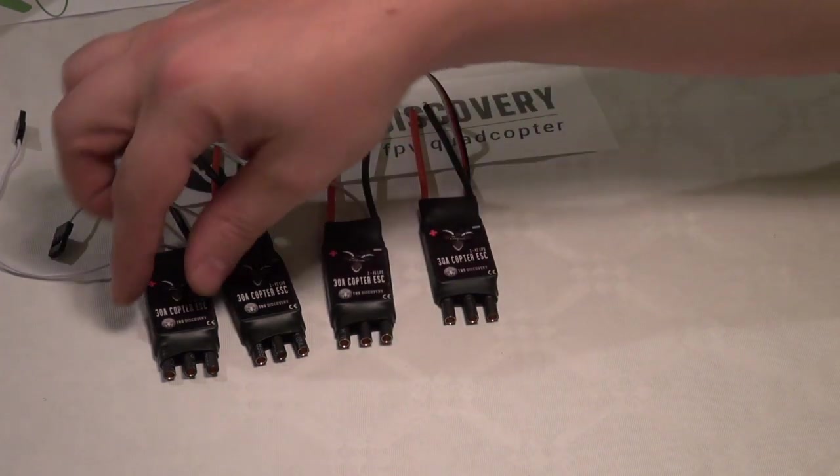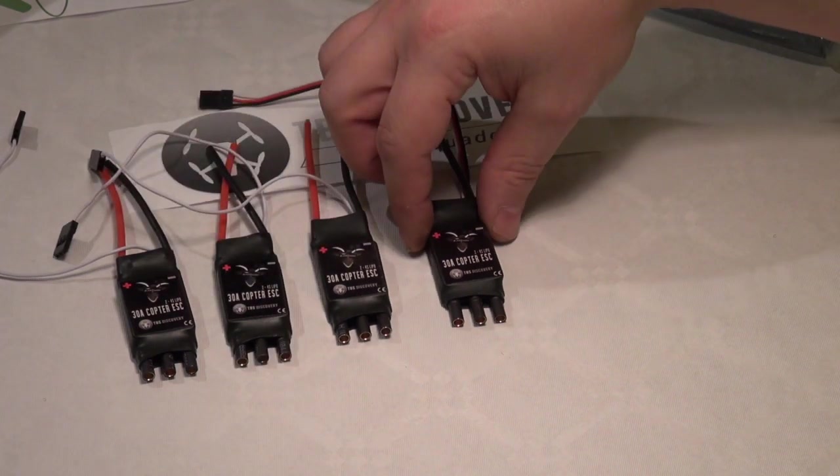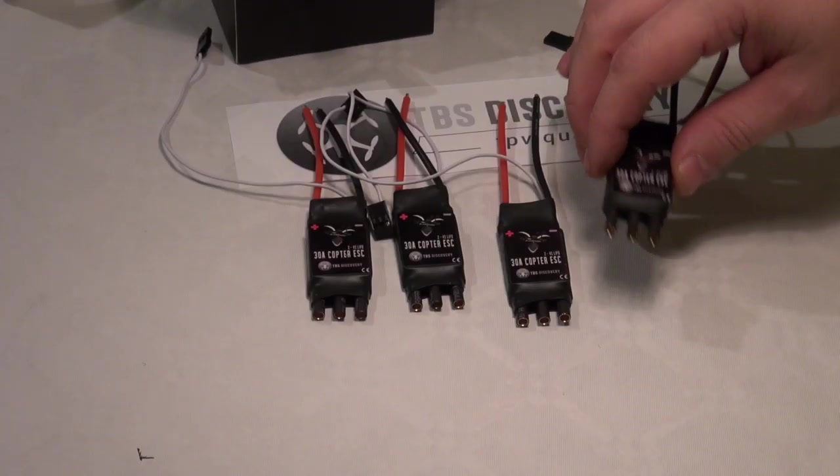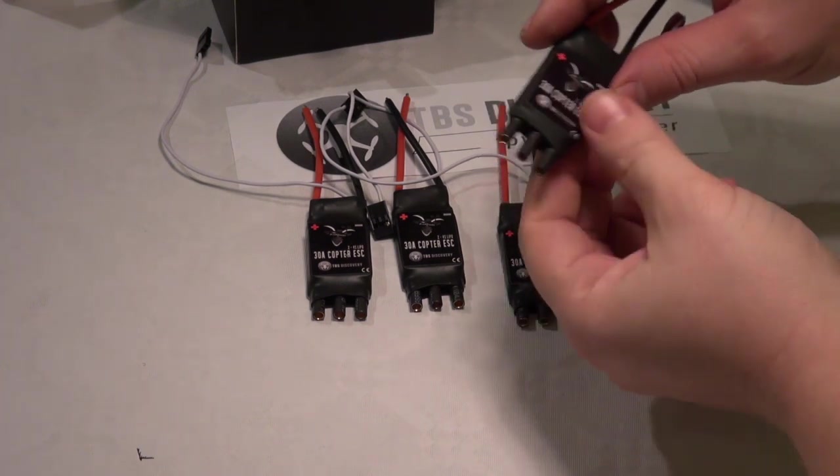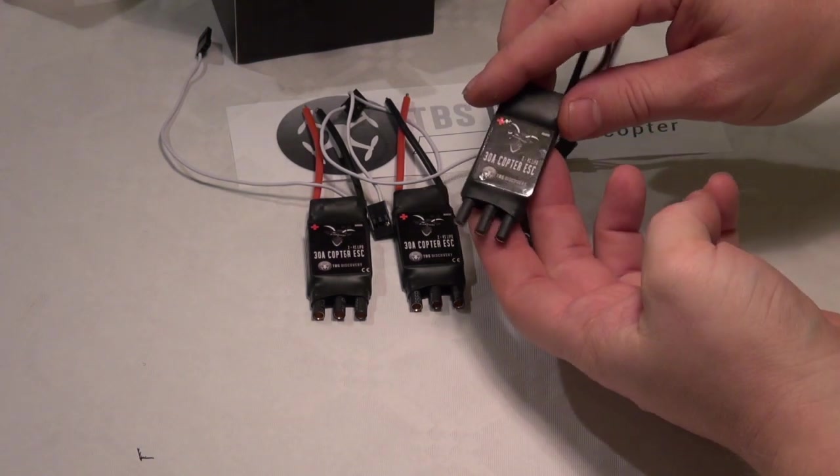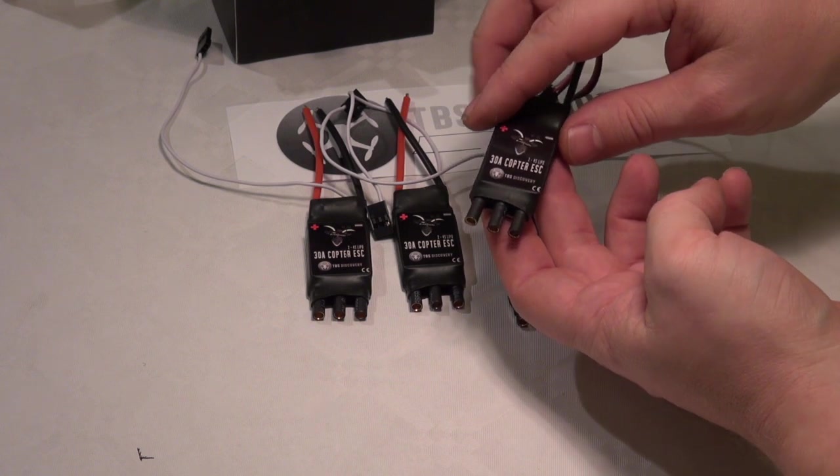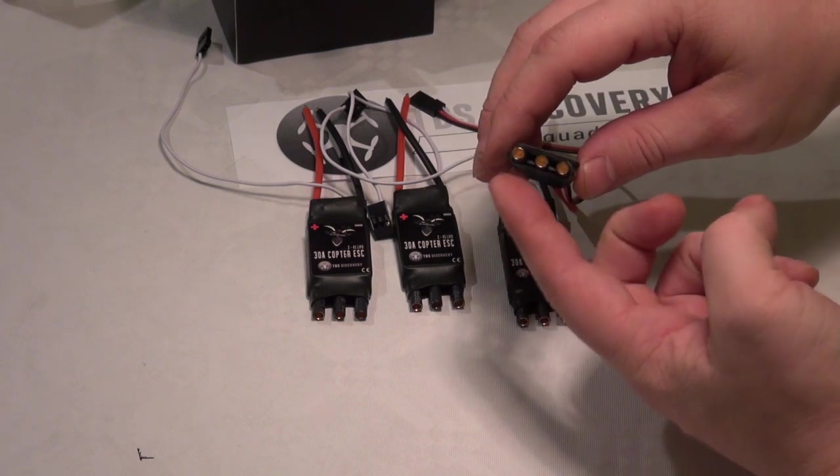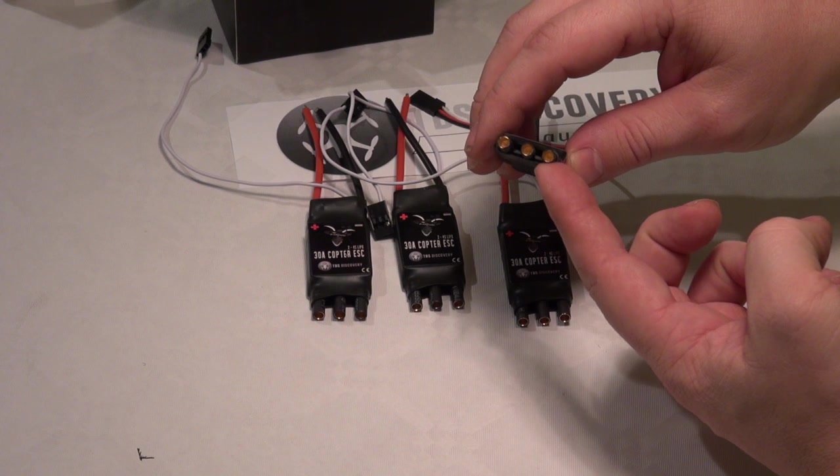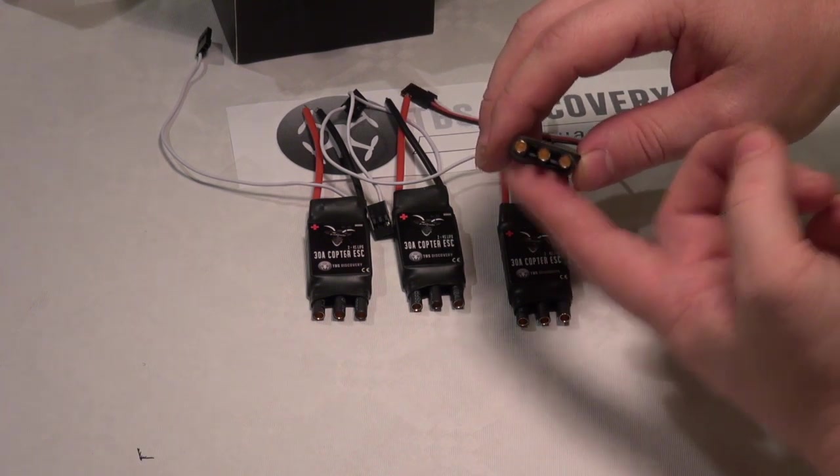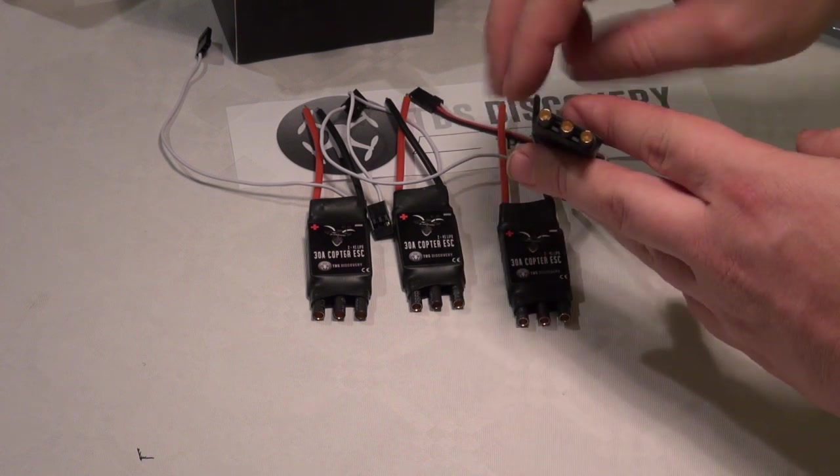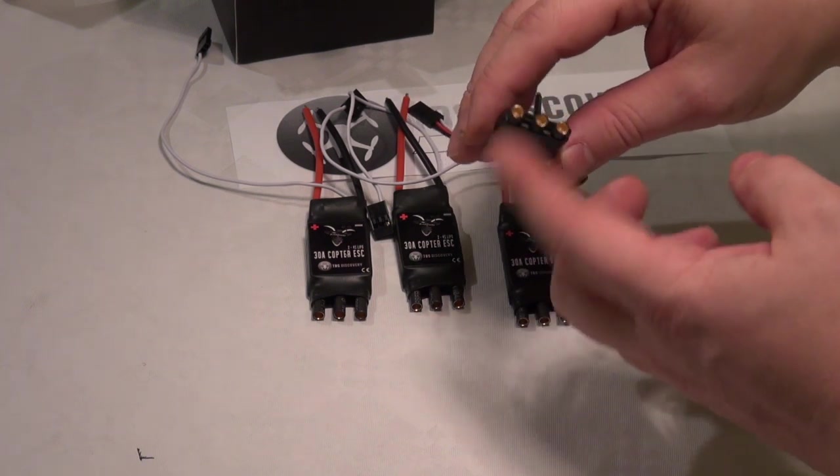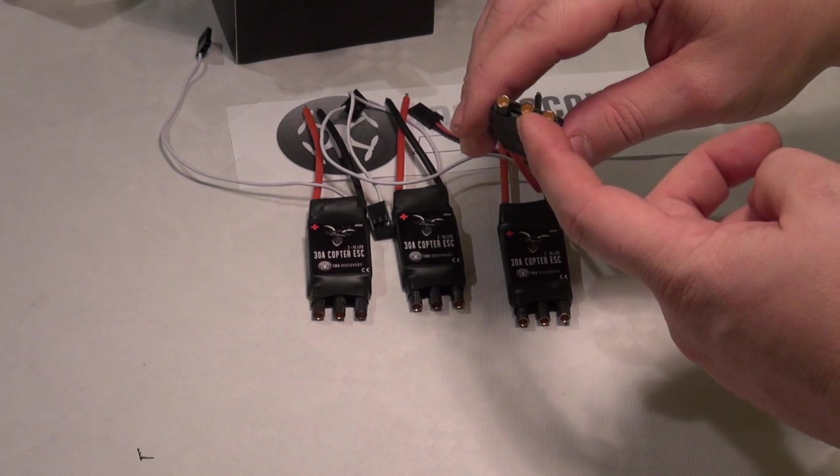This is the 30-amp copter ESC. One thing I've noticed about this new controller: they have gold connectors already mounted directly to the ESC instead of loose wires. They also have, I think, 3.5 millimeter gold connectors.